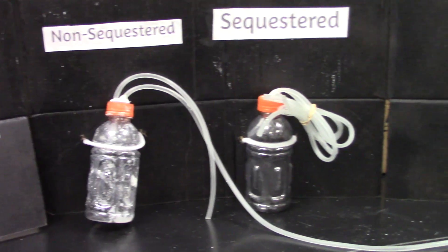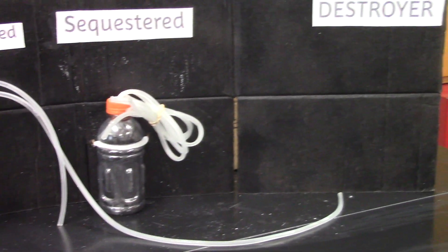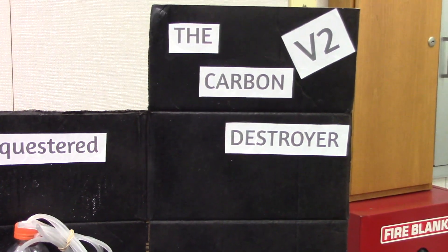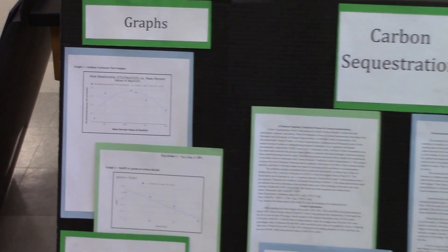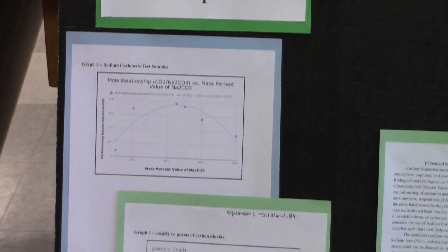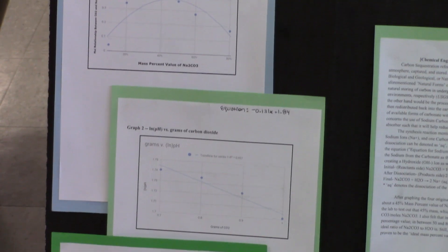So the chemical engineer is responsible for developing the mixture between the sodium carbonate and water. There's an optimum mixture between those two, so they conducted tests to figure out what that optimum is. They created graphs to display that information, and then used that information to then draw conclusions on what the best ratio is.